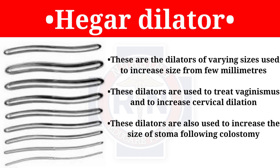Hegar dilator. These are dilators of varying sizes used to increase the cervical opening from a few millimeters. They are used to treat vaginismus, to increase cervical dilation, and also to increase the size of a stoma following colostomy.